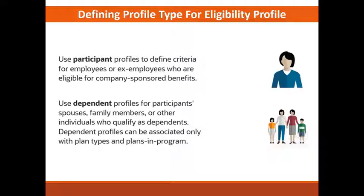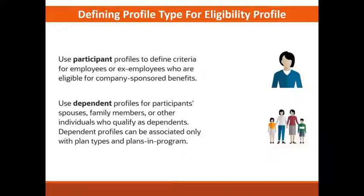The participant profile is looking for criteria about the participants themselves. Then we have the dependent profile. These profiles are used to look at things for the dependent within the participant's enrollment, such as the spouse, family members, or anybody who might qualify as a dependent. So let's move on to the application and see how we can create these eligibility profiles.